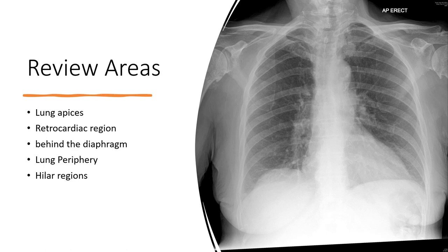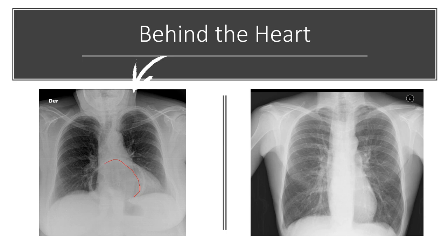Before finishing your assessment of a chest X-ray, always go back and double-check the hidden and commonly missed areas: the lung apices on both sides, the retrocardiac region behind the heart, behind the diaphragm, the periphery of the lungs, and the hilar regions. For example, in one chest X-ray you can see a left apical lung tumor suggestive of lung cancer. In another X-ray, a globular structure behind the heart is visible, sometimes with an air-fluid level — this is an example of a hiatus hernia.